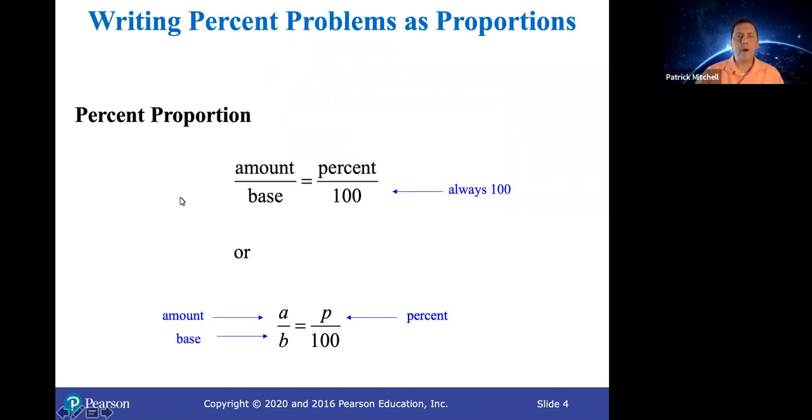The way that you set up a percent problem as a proportion is like this. You write the amount over the base and set that equal to the percent over 100. Or if you prefer being lazy, you can write it as a over b equals p over 100.